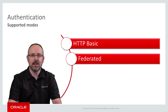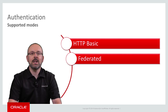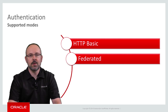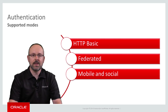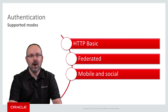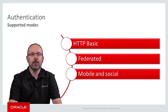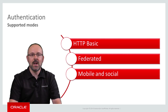Second is Federated SSO, through which authenticated users from your organization will seamlessly gain access to the applications and services of a partner. Third is Mobile and Social Authentication, which enables MAF applications to benefit from the full feature set of Oracle's identity management solutions. For example, if the OAMMS server is integrated with Oracle Access Manager and Oracle Adaptive Access Manager,